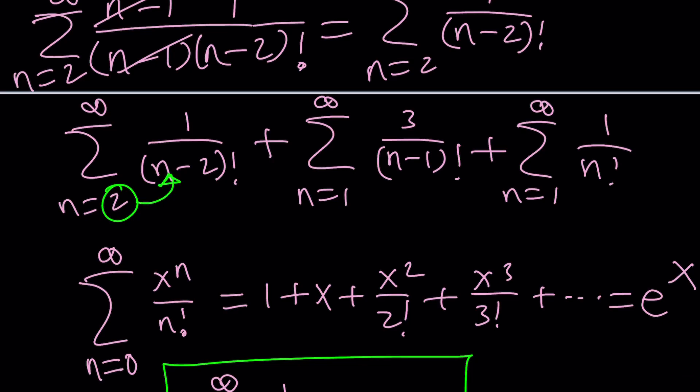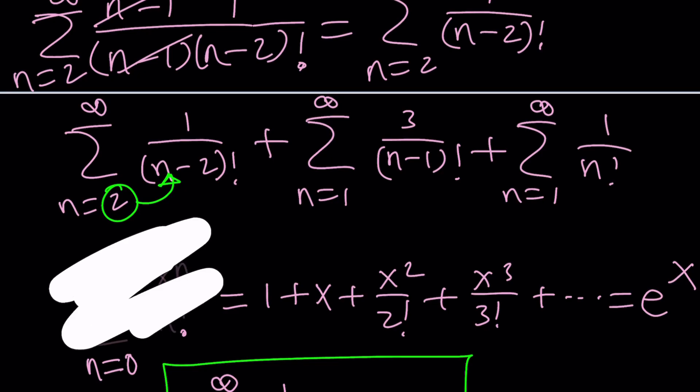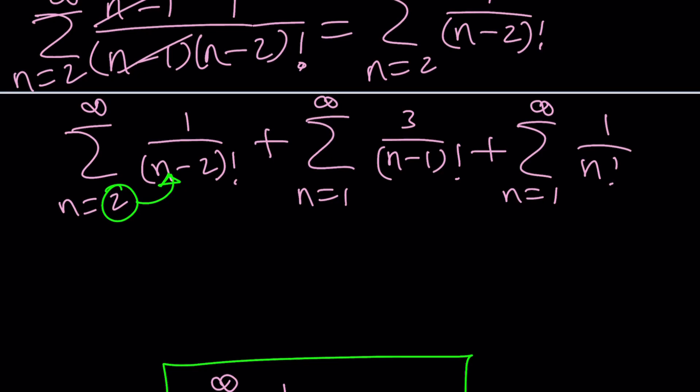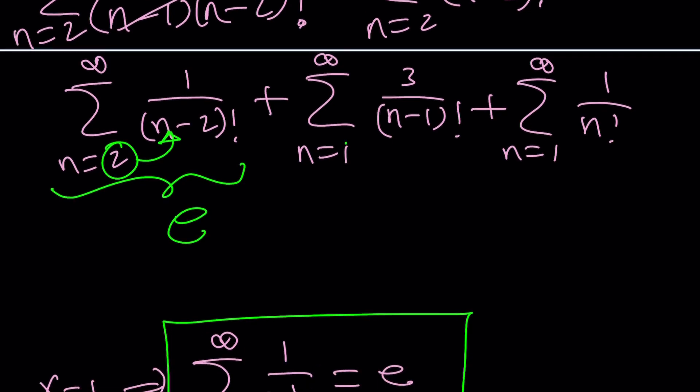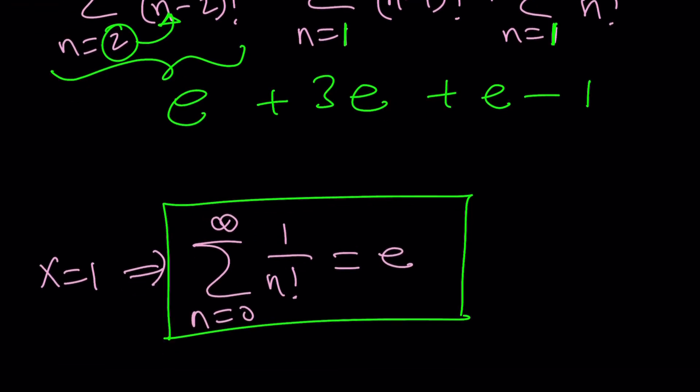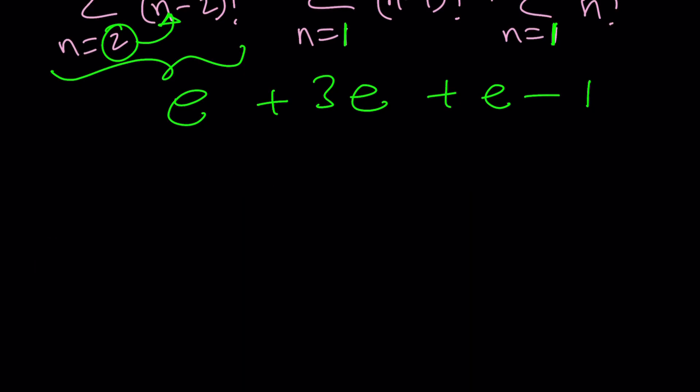So this part is e—it's the same as that one. With this one, with n equals 1, again it starts with 0 factorial, so it's 3 times e, which is 3e. But this one starts at 1, so it's missing the 0, which means it's e minus 1. You get the idea—we're missing the first term, that's why we have to subtract it. So what is that equal to? The sum is equal to 5e minus 1.